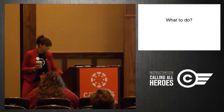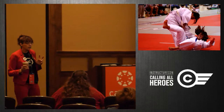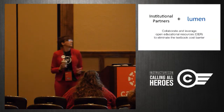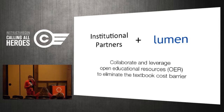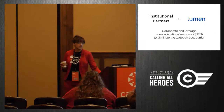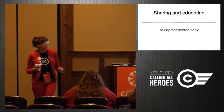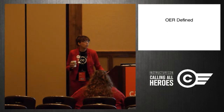So what do we do about it? Anyone into martial arts? We take our opponent's strength and use it against them. We take copyright and we use it against them. We leverage open. We collaborate. We build community. We eliminate the textbook cost barrier as a means of impacting student success. My work with Lumen — we are for-profit, most of our work is in learning analytics, but we are largely open advocates, and our work is in giving back to the community. Sharing and educating at unprecedented scale can happen when we use open educational resources.